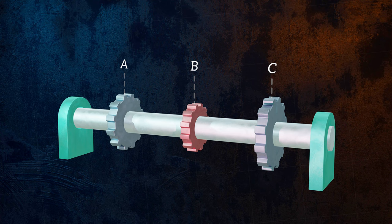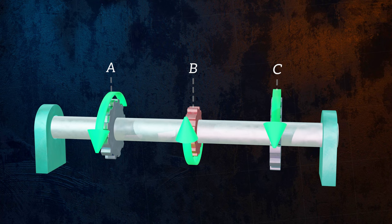It is loaded by three torques. Before we can use the equations for shear stress, shear strain, and angle of twist that we just developed, we need to figure out the internal torque at each location along the shaft.